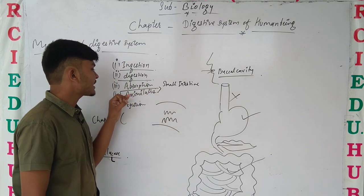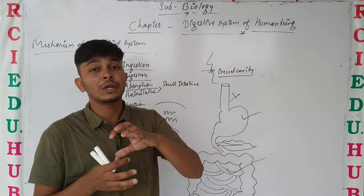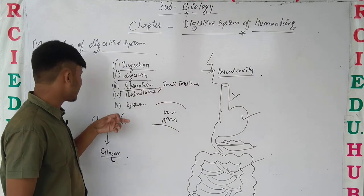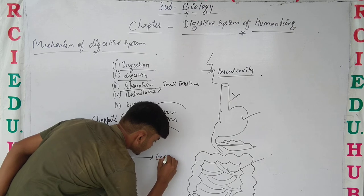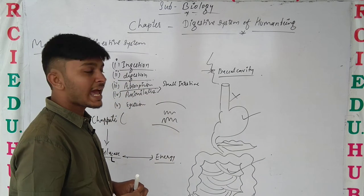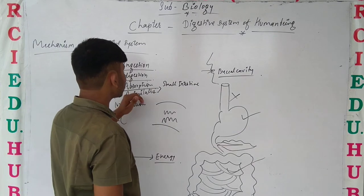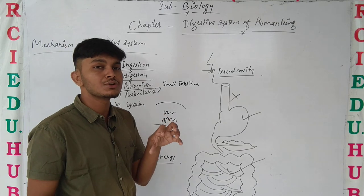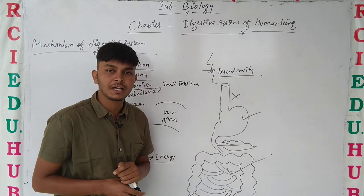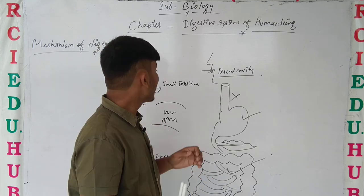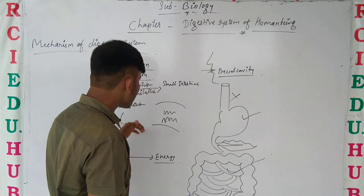Then we talk about assimilation. Assimilation means that whatever food is digested, that food is circulated to all cells of the body. The absorbed food is converted into energy. This process is known as assimilation. Assimilation mainly takes place in the body cells — specifically in the mitochondria. That is why we call mitochondria the powerhouse of the cell, because the assimilation process takes place in the mitochondria, where absorbed food is converted into energy.